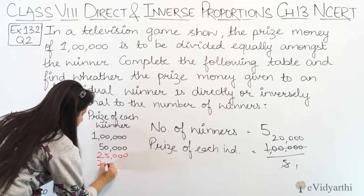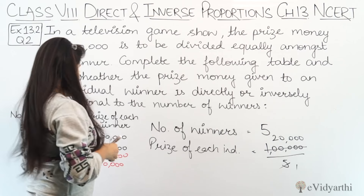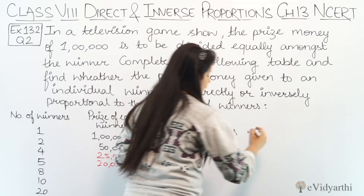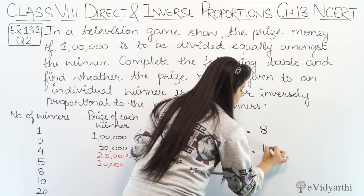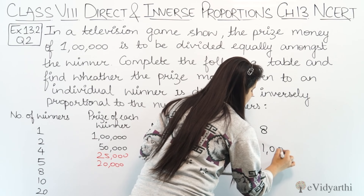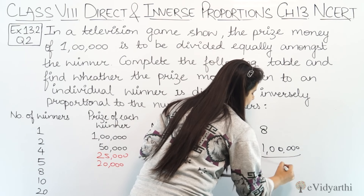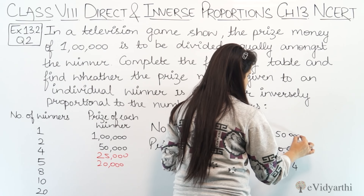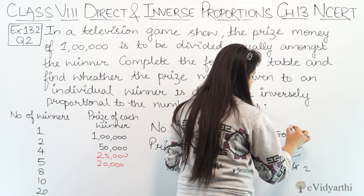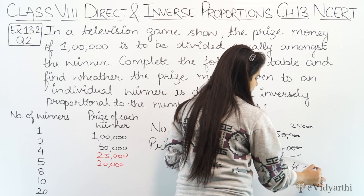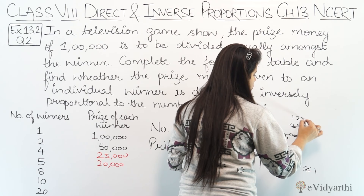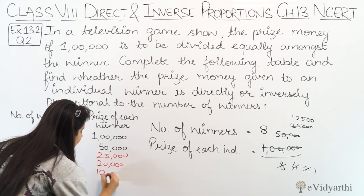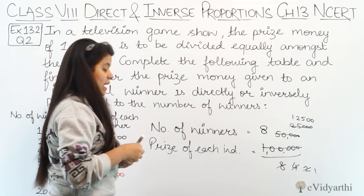So we write: 5 logon mein 20,000 each will get. Ab aage aate hain next pe. Ab next mein hmare paas hai number of winners 8. Agar 8 logon mein divide karoge, again the prize money is 1 lakh rupees divided by 8 — ye aa gaya 12,500. Agar 8 logon mein distribute hogi, to this will be 12,500 each.